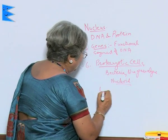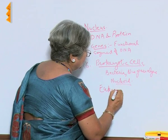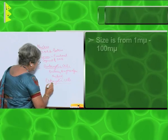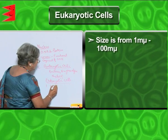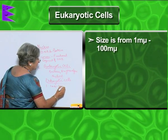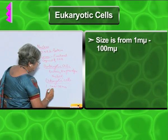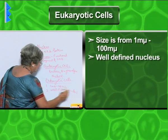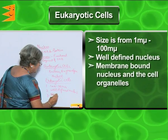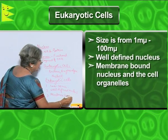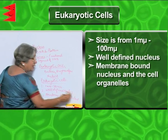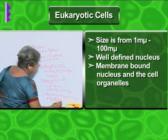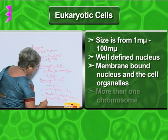These kinds of organisms are called eukaryotic. The features of eukaryotic cells: first, the size is from 1 micron to 200 microns; second, a well-defined nucleus; third, membrane-bound nucleus and cell organelles.